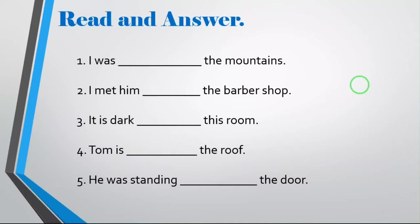The correct answer is 'in the mountains.' In the mountains, there are lots of trees, so you are inside the forest. Is that clear? Yes, I understand. I was actually thinking I'm on the mountains — oh, you're thinking of being on top. There was actually another possibility. Okay, next sentence: I met him at the barbershop. Very good. You can actually use two — in or at — inside the barbershop or outside.